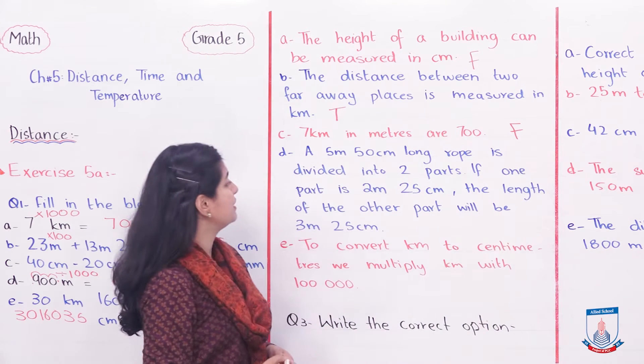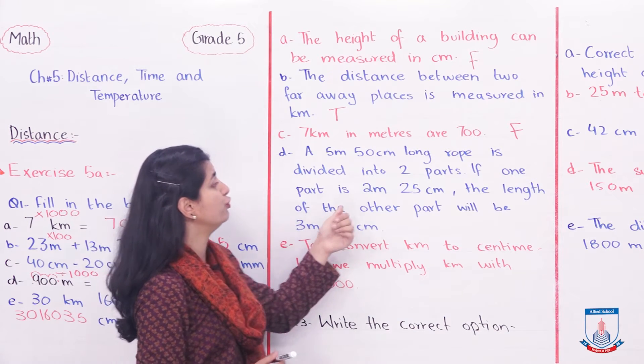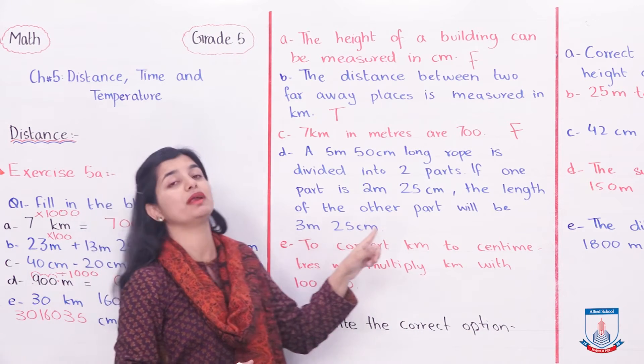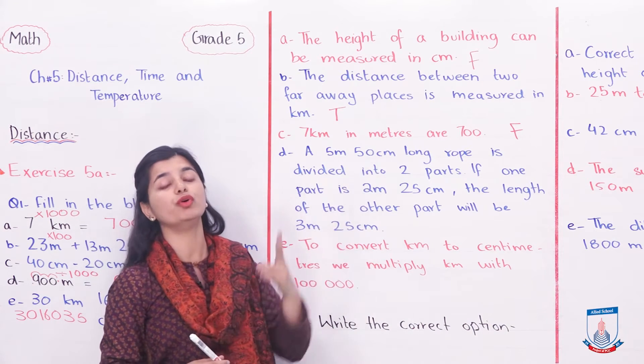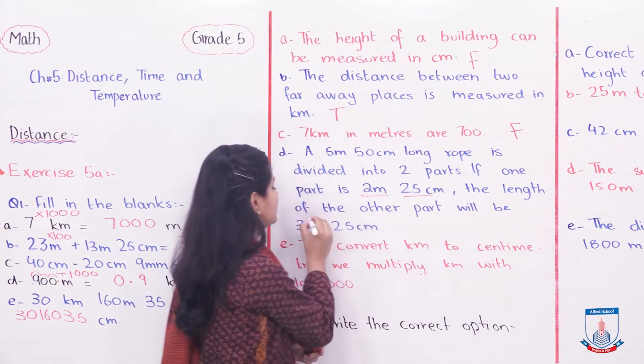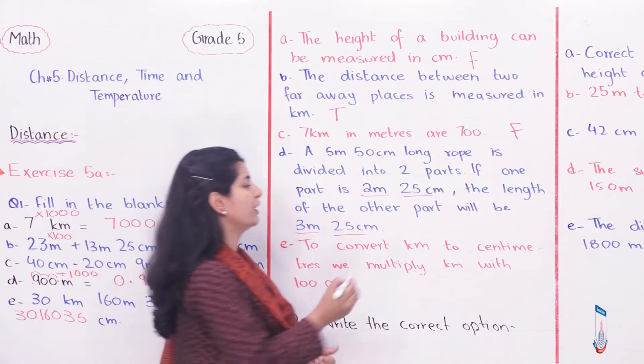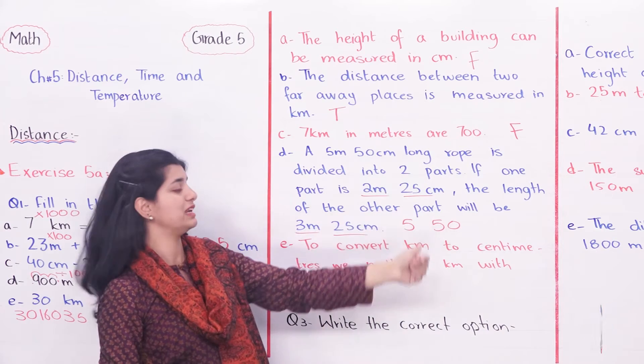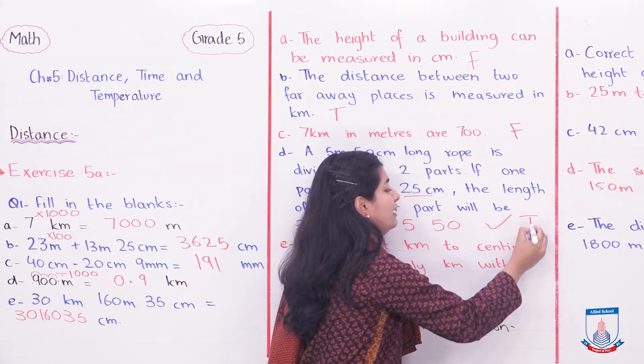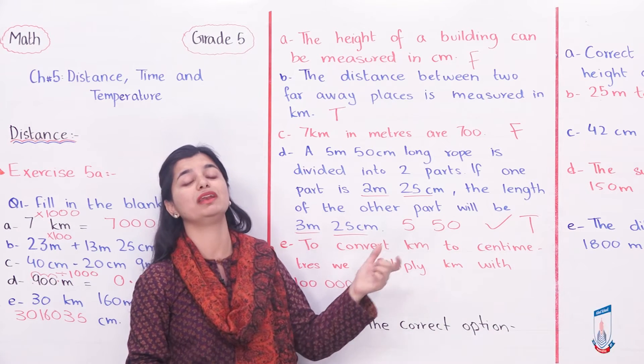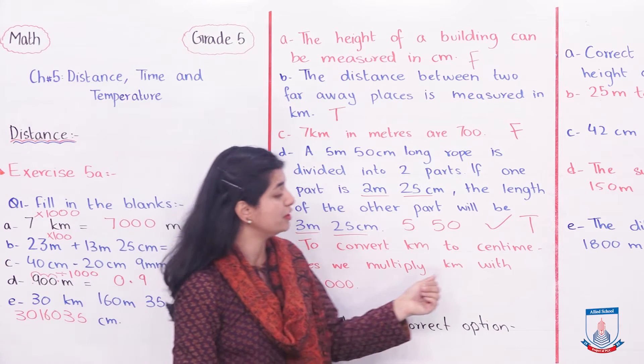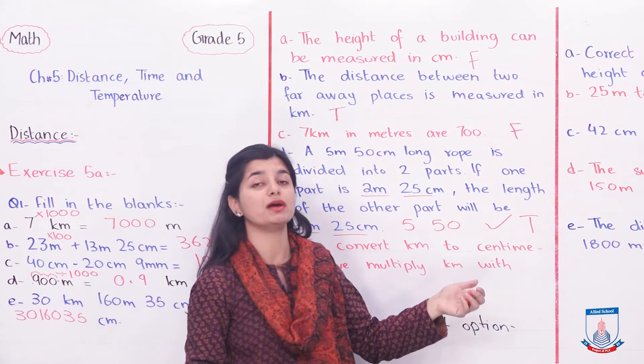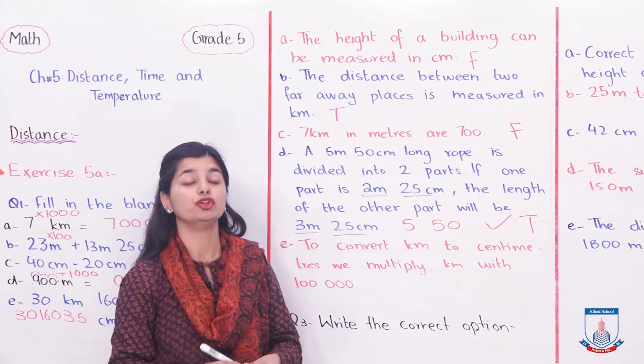Part D: A 5 meter 50 centimeter long rope is divided into two parts. If one part is 2 meters 25 centimeters, the length of the other part will be 3 meters 25 centimeters. When you add 2 plus 3 equals 5, and 25 plus 25 equals 50, that accurately gives 5 meter 50 centimeter, hence this is true. Part E: To convert kilometers to centimeters we multiply kilometer with 100,000. This is also true.